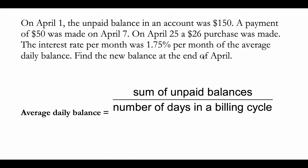In this video we're going to learn how to find the new balance at the end of a month. On April 1st, the unpaid balance in an account was $150. A payment of $50 was made on April 7th. On April 25th, a $26 purchase was made. The interest rate was 1.75% per month. Find the new balance at the end of the month of April.